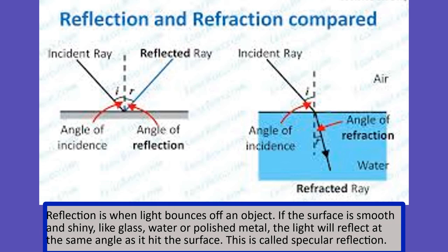Reflection is when light bounces off an object. If the surface is smooth and shiny, like glass, water or polished metal, the light will reflect at the same angle as it hit the surface. This is called specular reflection.